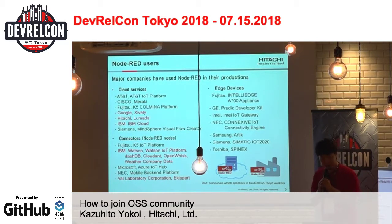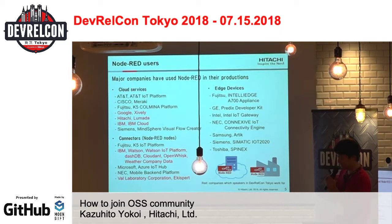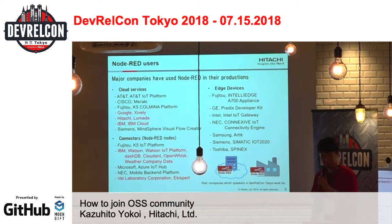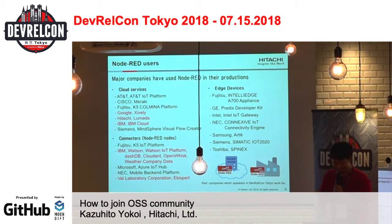And the third is edge devices. Fujitsu, GE, Intel, NEC, Samsung, Siemens, and Toshiba have their own edge devices which bundle Node-RED. The character mark means the developer speaker's company. So a lot of companies use Node-RED.